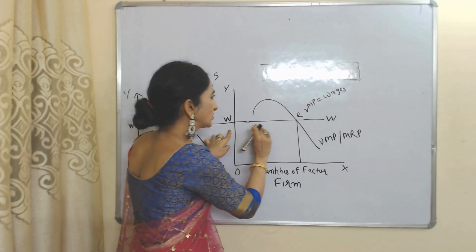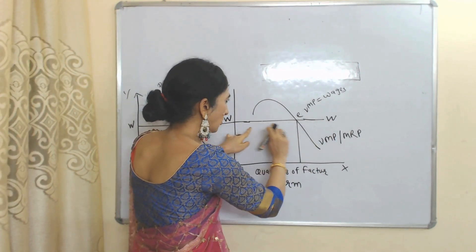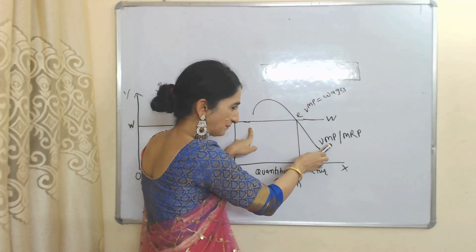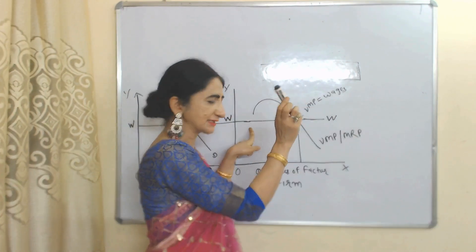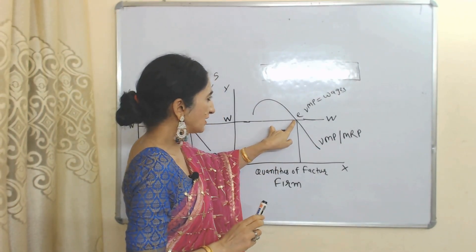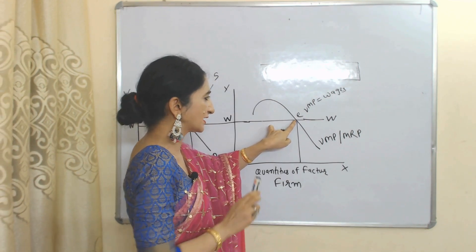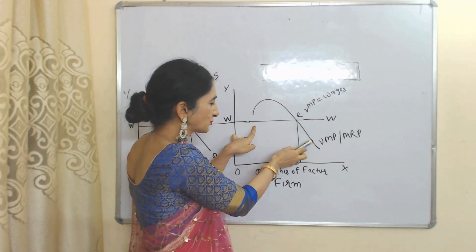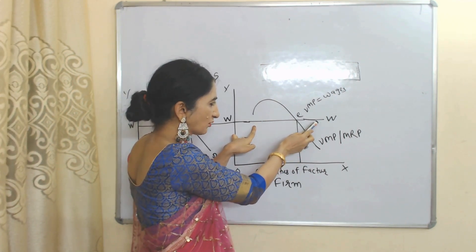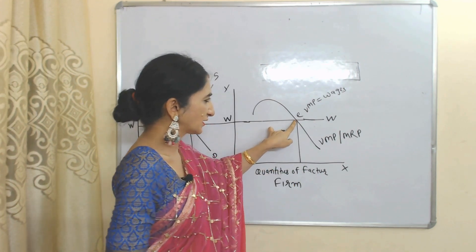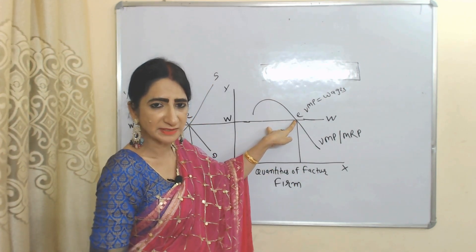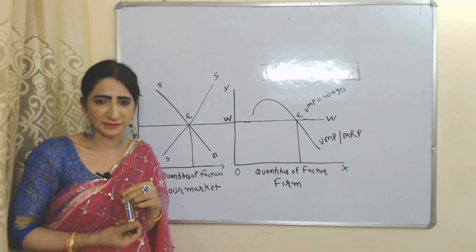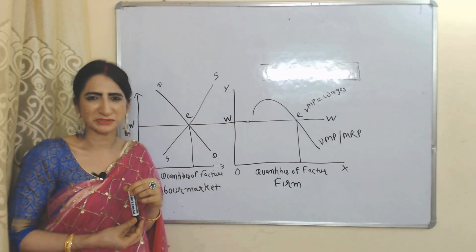In the firm's diagram, this horizontal line represents wages, which are constant under perfect competition. This curve represents our VMP, and VMP equals MRP as we earlier discussed. E is called the equilibrium point because at this point wages are equal to VMP. Before this point, VMP is more than wages; after this point, wages are more than VMP. So E is the equilibrium point where VMP equals wages. This is all about factor pricing in case of perfect competition. Thank you so much for watching.